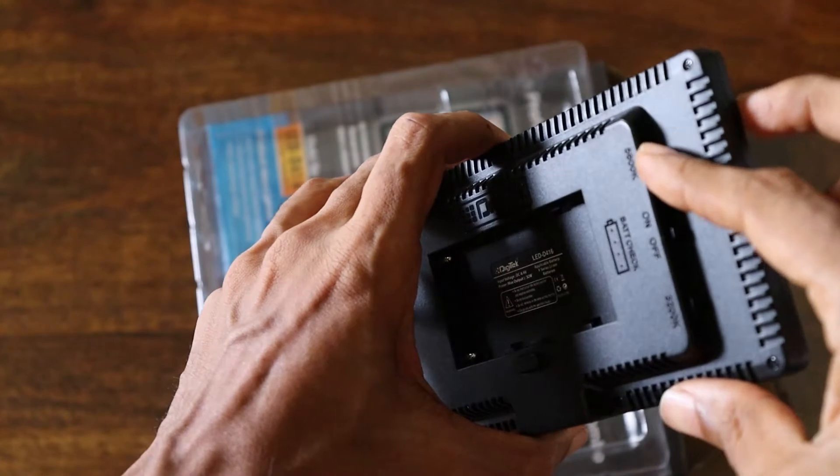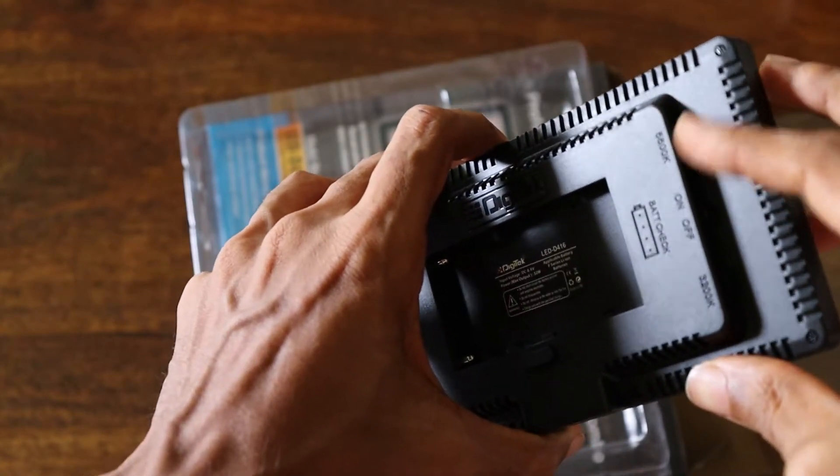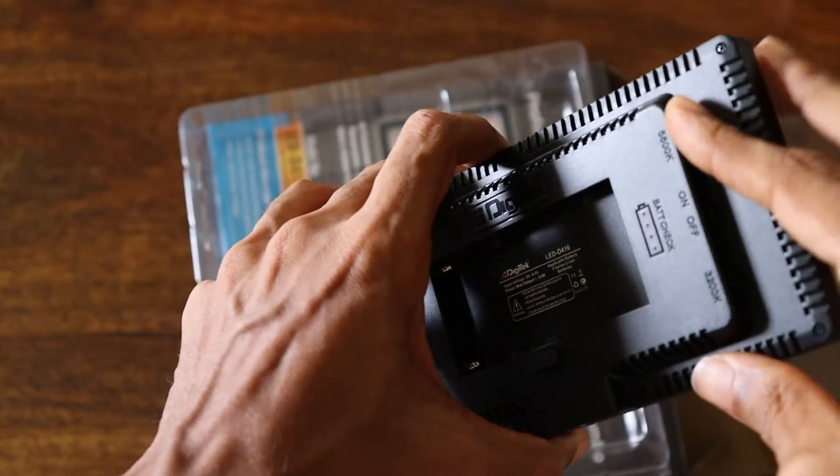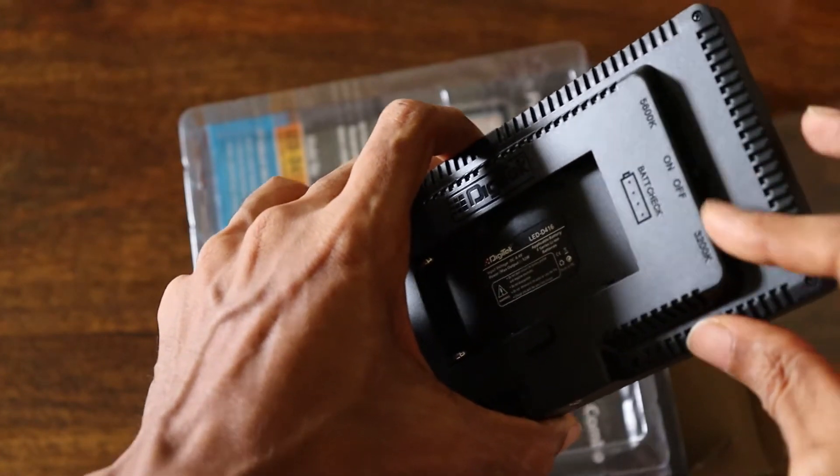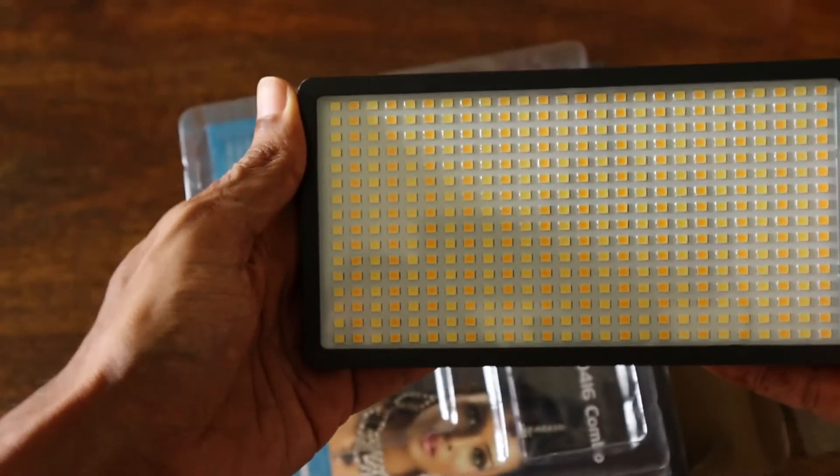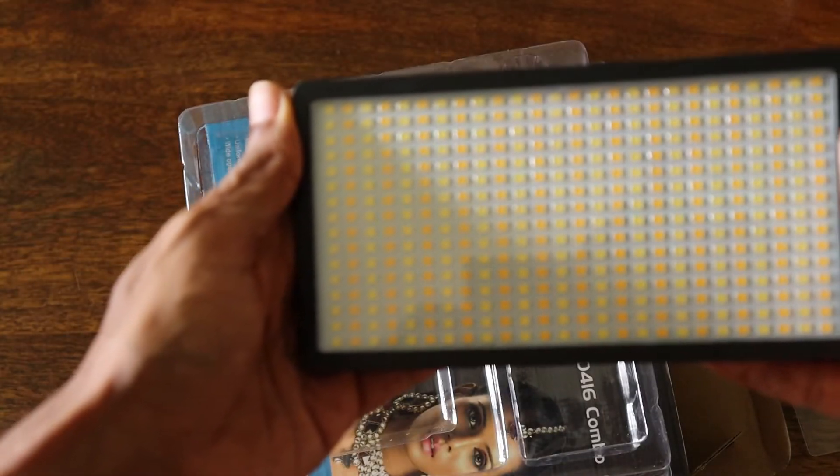It's got a couple of knobs here. One for a warm light setting. The other one for a cooler light setting. And an on off switch. Two types of LEDs in the same one unit.